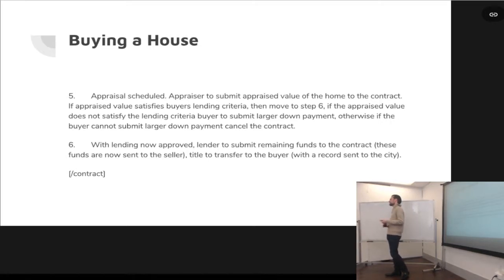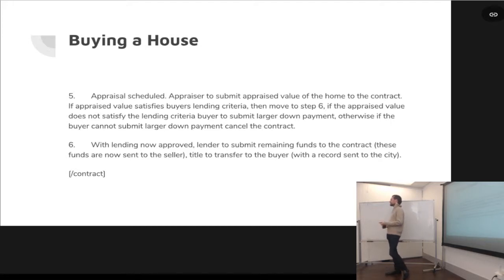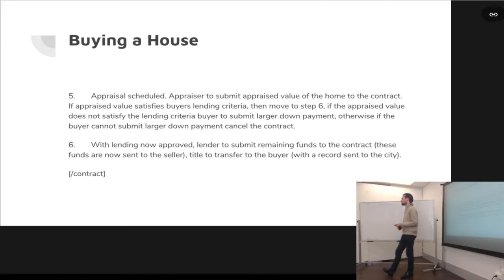It doesn't necessarily prevent him from starting a second contract, but you could put in clauses saying you agree that you're not going to accept any other offers. Also, with the way the protocol works, he wouldn't be able to try to sell his house to two different people because he only has one title. You could put in language that he wouldn't be able to start another contract as part of the agreement.